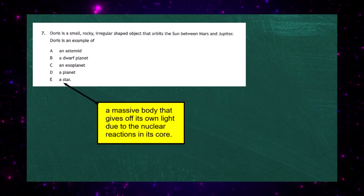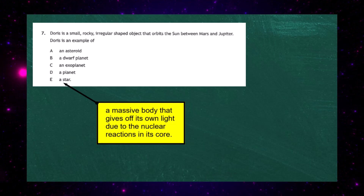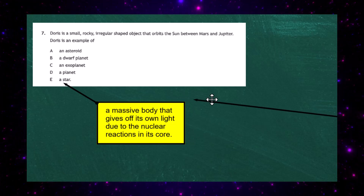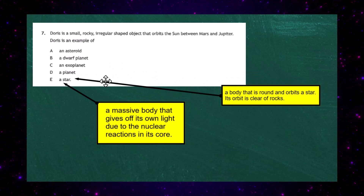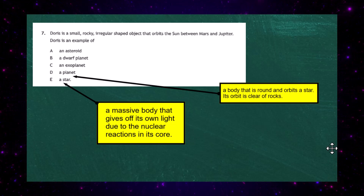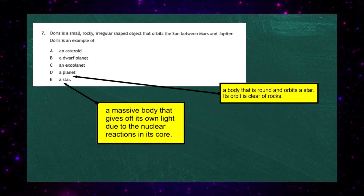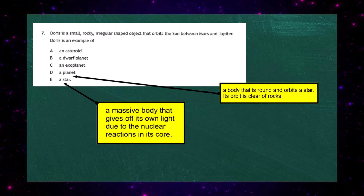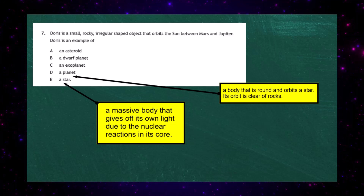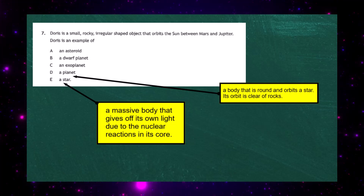A star is a massive body that gives off its own light due to nuclear reactions in its core, so it's definitely not Doris. A planet is a body that is round and spherical and orbits a star, but most importantly its orbit is completely clear of any rocks or debris — it clears away all debris because of its mass.